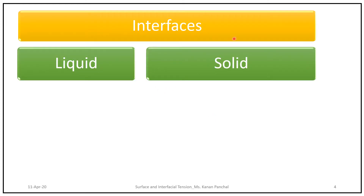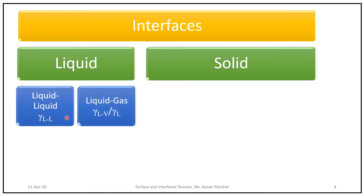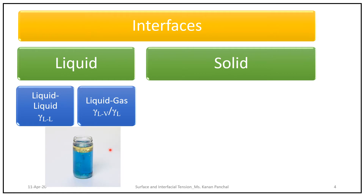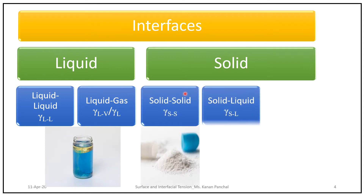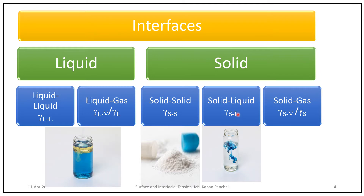Interfaces are classified into two types: liquid and solid. Liquids are further divided into liquid-liquid interface and liquid-gas interface. We have an example of water and oil — the boundary formed between these two liquids makes up the liquid-liquid interface. The oil and the atmospheric air above it makes up the liquid-gas interface, also called the liquid surface. In solids, we have three categories: solid-solid, solid-liquid, and solid-gas.